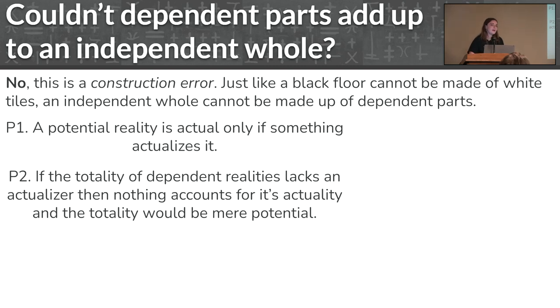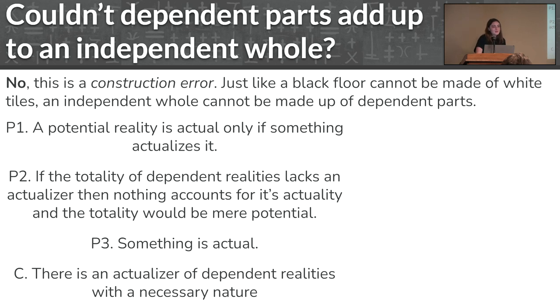If the totality of dependent realities lacks an actualizer, then nothing accounts for its actuality, and the totality would be merely potential. So if everything were just a series of dependent causes, then nothing would have been there to cause them in the first place. We know that something is actual, or at least I think we can all safely assume that, right, for this moment.